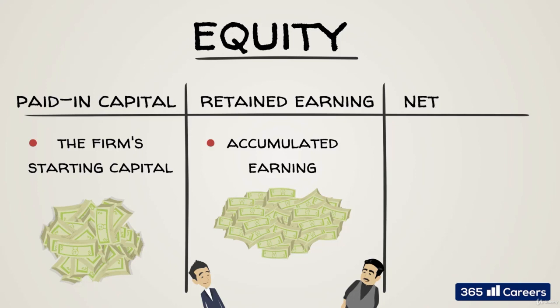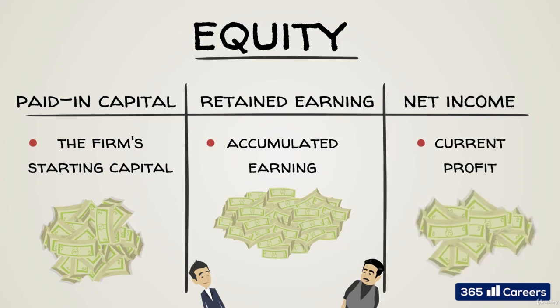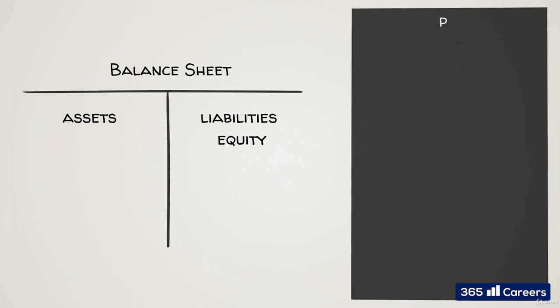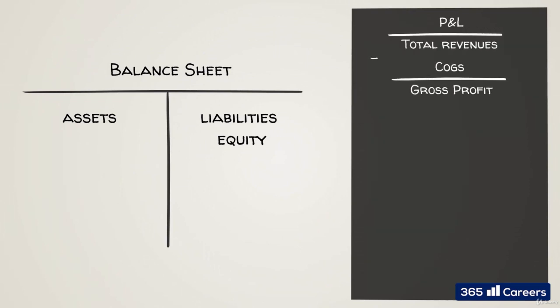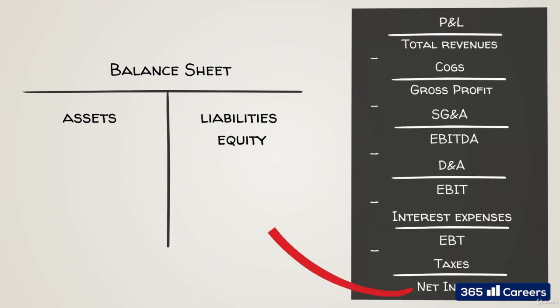It makes sense, right? And finally, net income — the profit we've made this year. By default, it is part of equity, because this is income that belongs to shareholders. It is also what connects directly the P&L and the balance sheet.